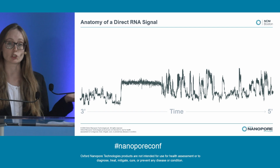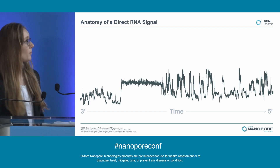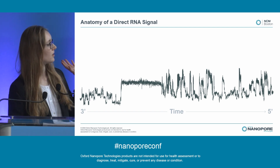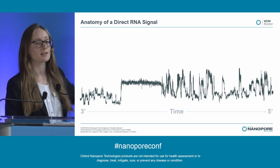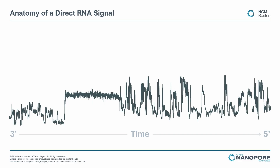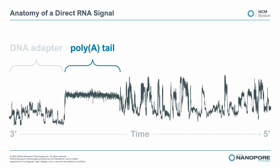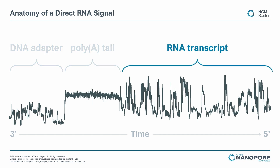So this is what a typical signal looks like. We have time across the x-axis and amplitude on the y-axis. There are several features here that you can discern by eye without any analysis. Firstly, we have the DNA adapter, which is used to attach the motor to the RNA read so that you can sequence it. Next, we have the poly-A tail. And finally, we have the RNA transcript itself.